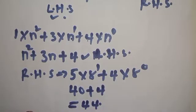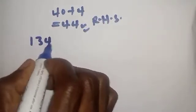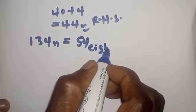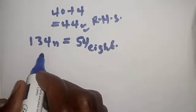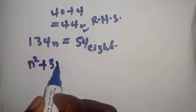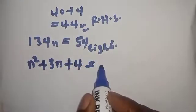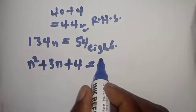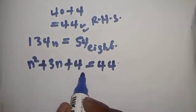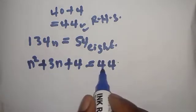Now let's combine the two equations together. The equation 134 base n equal to 54 base 8, when converted to base 10, gives us n squared plus 3n plus 4 equal to 44, since 54 base 8 converts to 44 in base 10.